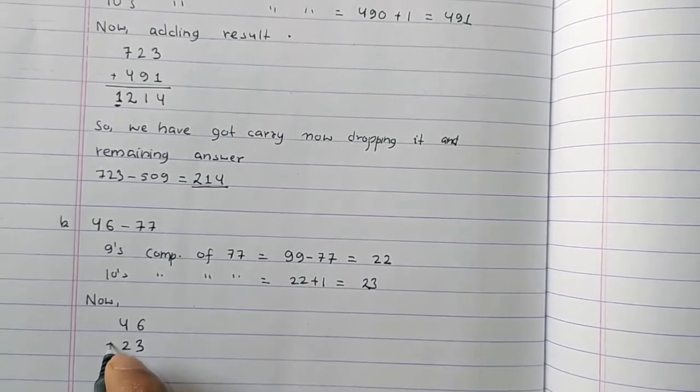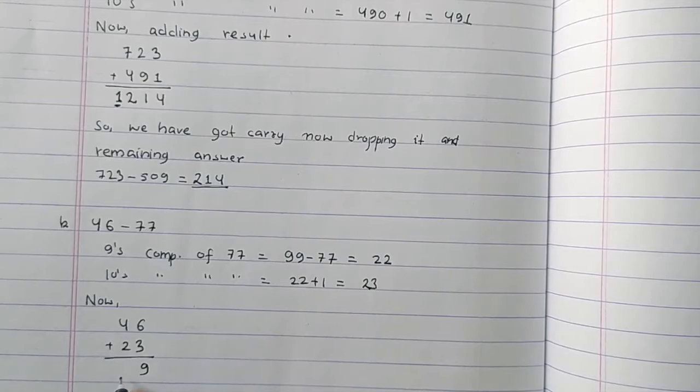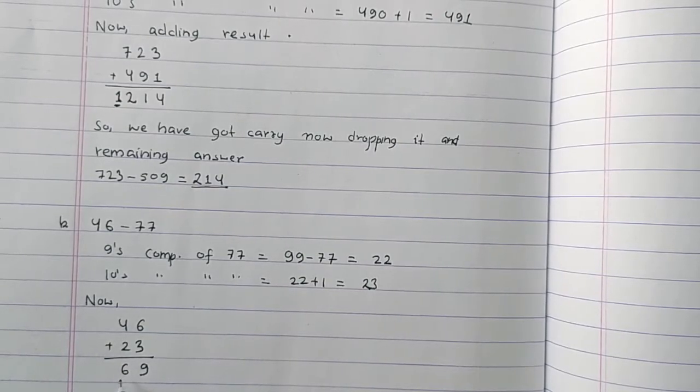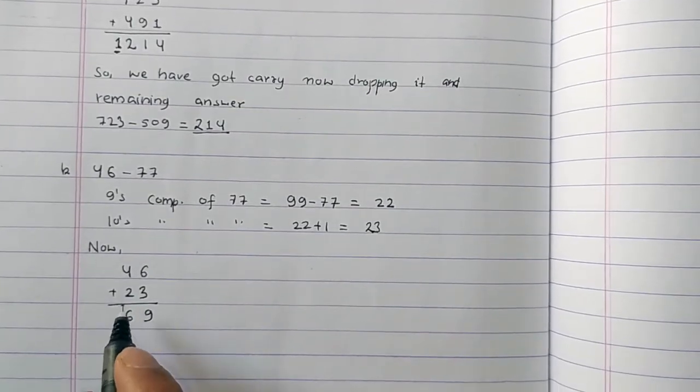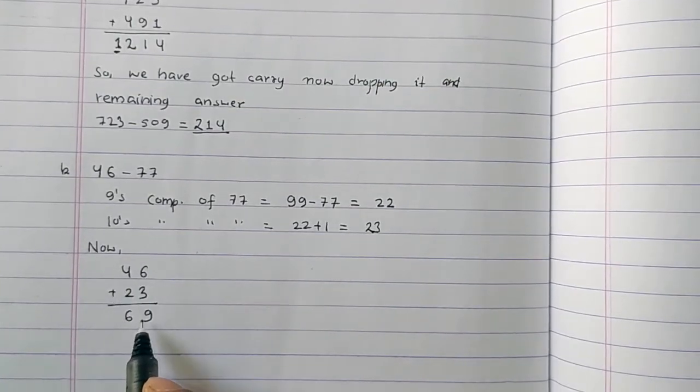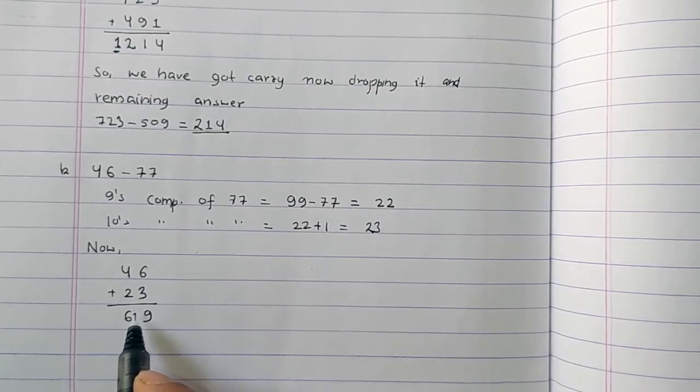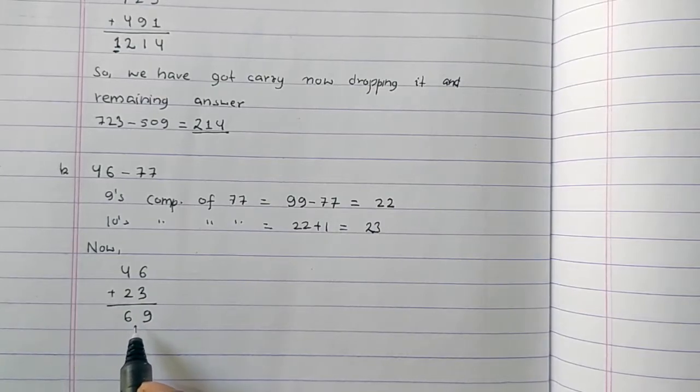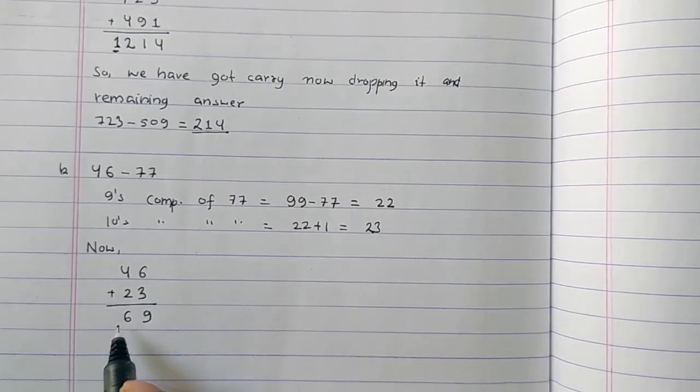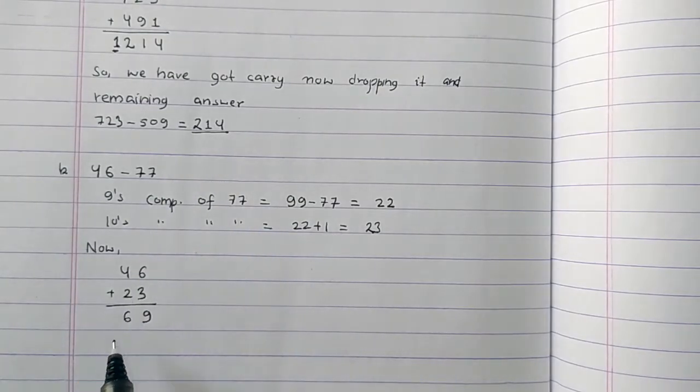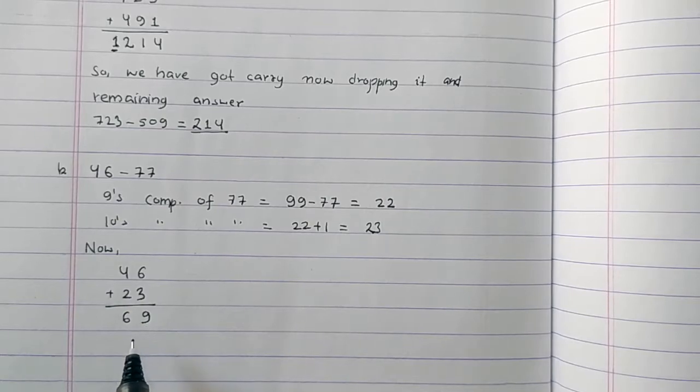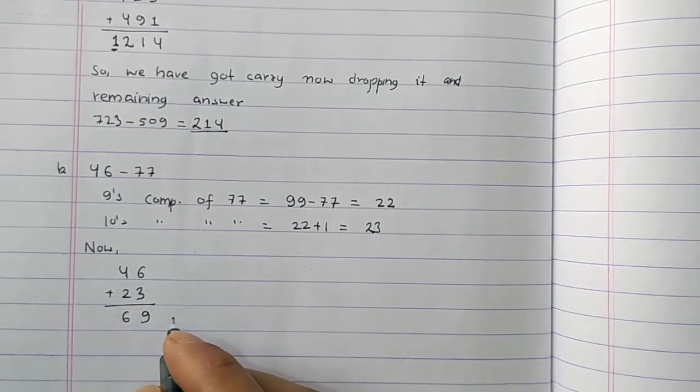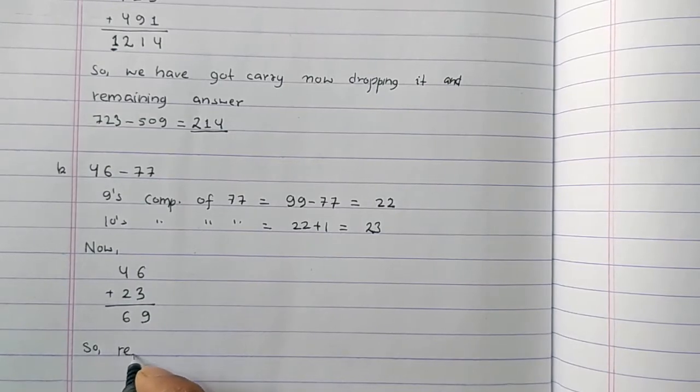46 plus 23 equals 69. We don't have a carry bit. When there is no carry, the answer is negative. We need to find the complement.